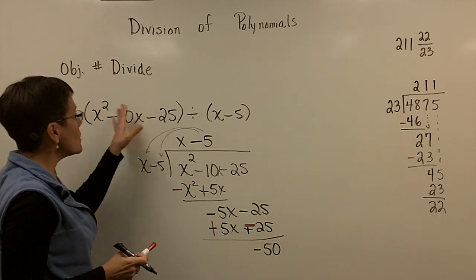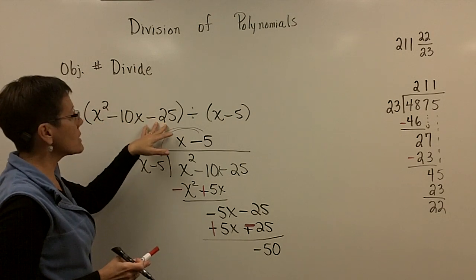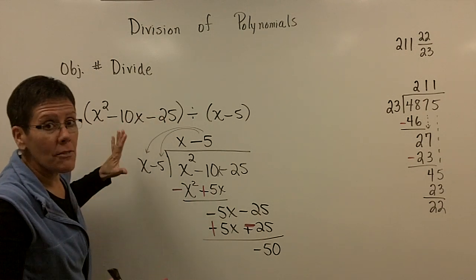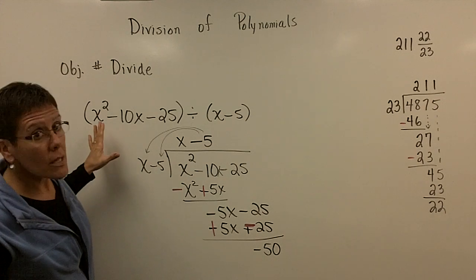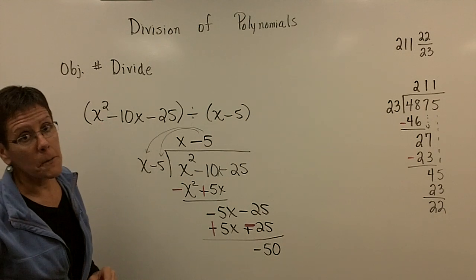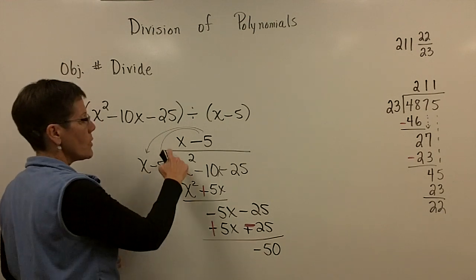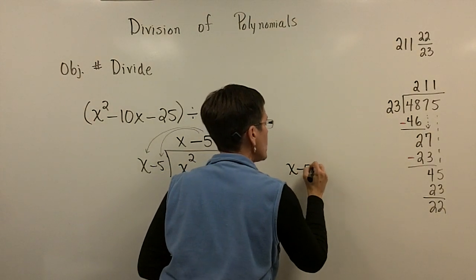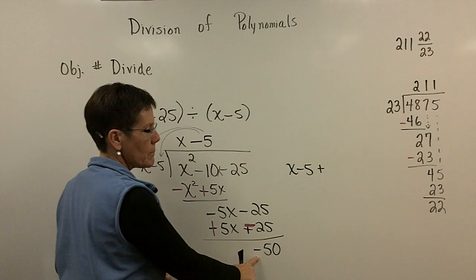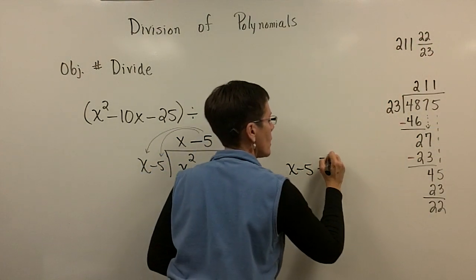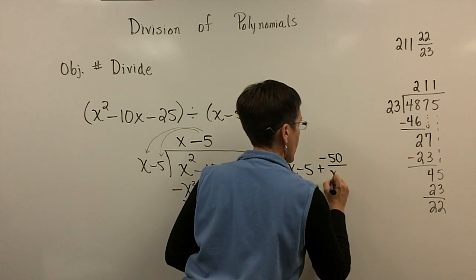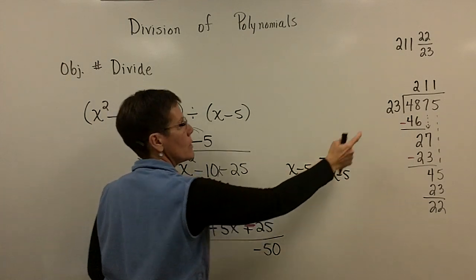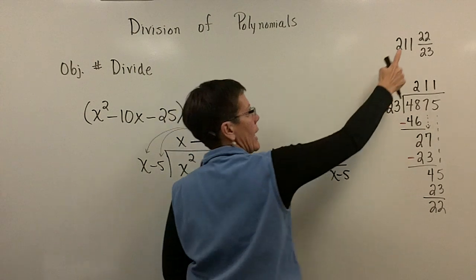what this means is that this was not factorable. It was not possible to come up with two numbers whose product is a negative 25 and adds to be a negative 10. Negative 5 and 5 are the only two numbers whose product is a negative 25 that could remotely come close to adding to be a negative 10. And they add to be zero. So it was not factorable. My answer to this problem is the x minus 5. I always put a plus sign right here. Plus my remainder. See the remainder of the 22 over 23? Plus my remainder of a negative 50 over my divisor, which was x minus 5.